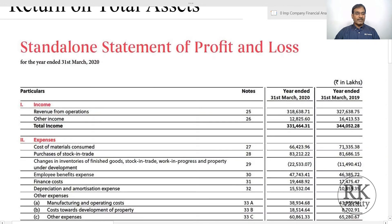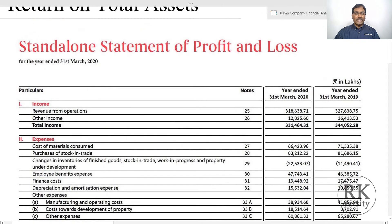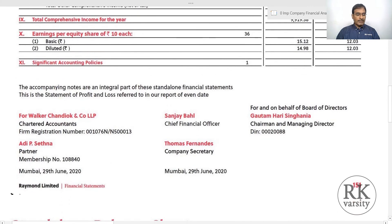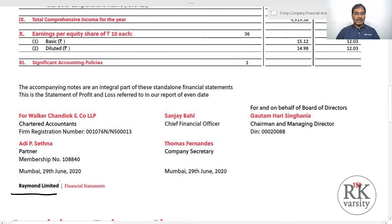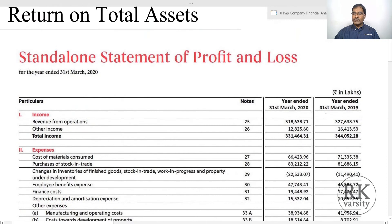To explain this ratio, I sourced the statement of profit and loss account and balance sheet of Raymond's India Limited. The data covers two financial years: year ended 31st March 2019 and 31st March 2020, and all amounts are in rupees lakhs.